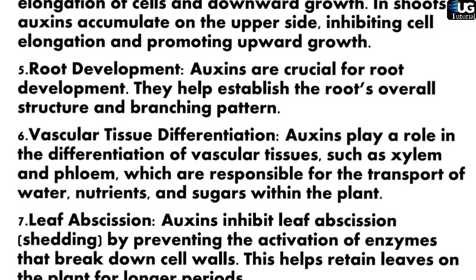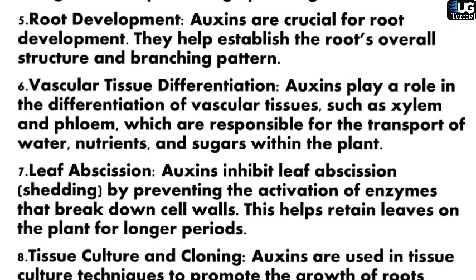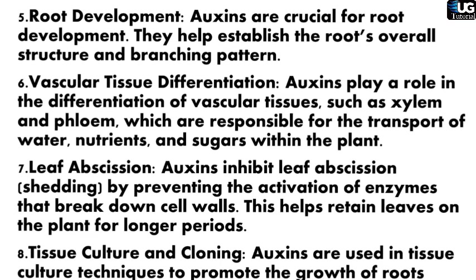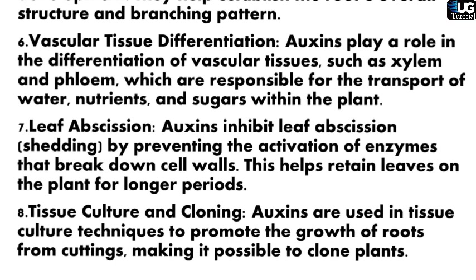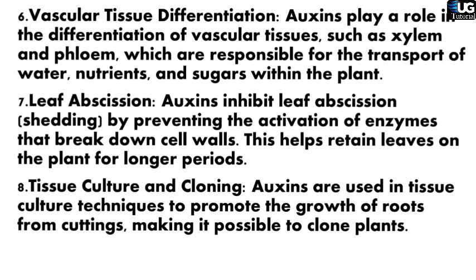7. Leaf Abscission: Auxins inhibit leaf abscission — shedding — by preventing the activation of enzymes that break down cell walls. This helps retain leaves on the plant for longer periods. 8. Tissue Culture and Cloning: Auxins are used in tissue culture techniques to promote the growth of roots from cuttings, making it possible to clone plants.